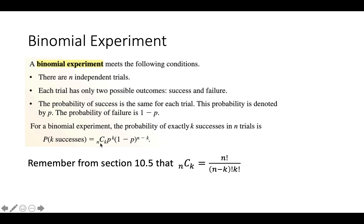This is a jam-packed formula, so examples will help, but here it is: for a binomial experiment, the probability of exactly K successes in N trials is calculated using this formula. It uses the combination formula from section 10.5. When you see the notation N subscript C subscript K, use that combination formula.